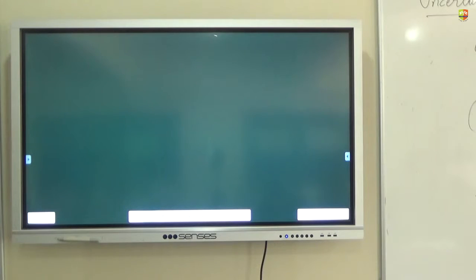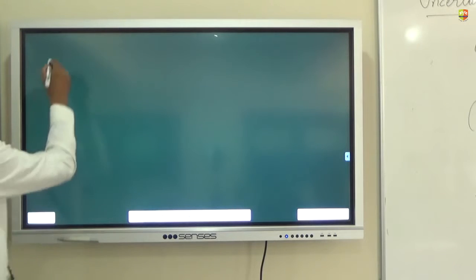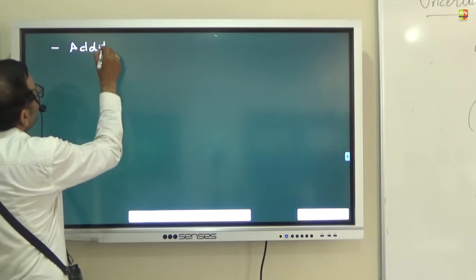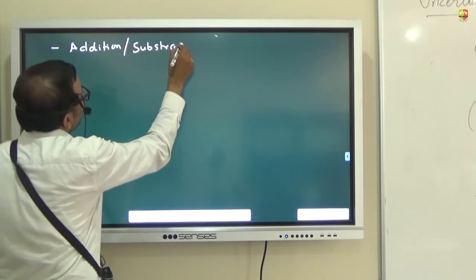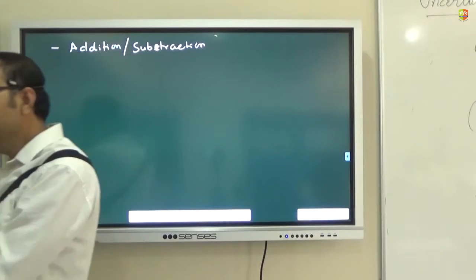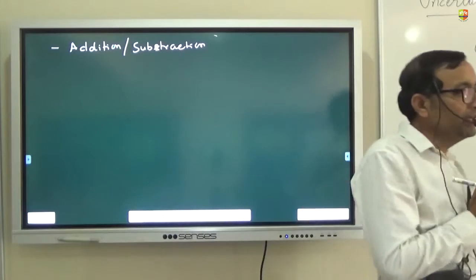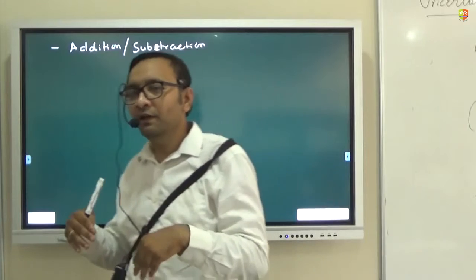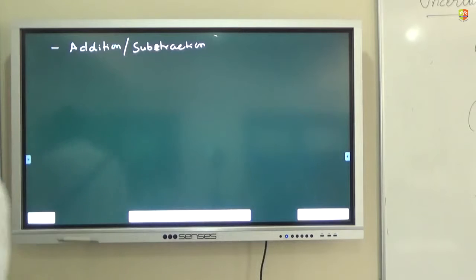Write down the rule for addition or subtraction. Addition and subtraction: the final result should retain as many decimal places as are there in the number with the least decimal place. Understood? It should retain how many decimal places? Whichever has the least number of decimal places. Suppose you are adding two numbers—one has three decimal places, other has two. So the outcome should have only two. Understood? Let's take one example.